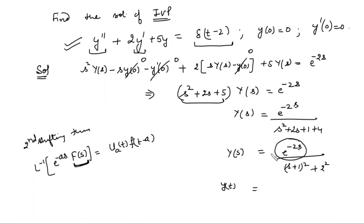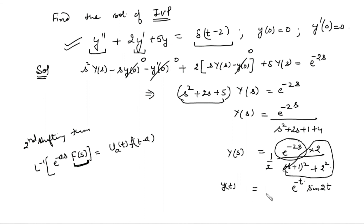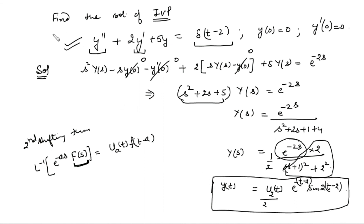First find the inverse Laplace of F(s) equals 1 over (s plus 1) squared plus 4. Dividing and multiplying by 2, this is the inverse Laplace of sine 2t, but since s is shifted by s plus 1, the inverse Laplace is e to the power minus t times sine 2t. Now since unit step is involved, we write unit step at 2, times e to the power minus (t minus 2) times sine 2(t minus 2). This is the solution of the initial value problem — even though the function on the right-hand side is not piecewise continuous, the Laplace transform gives us the solution.